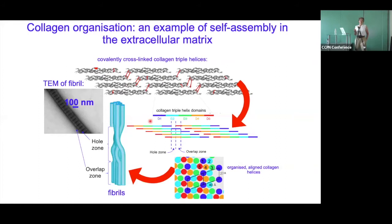Collagen is going to be the running theme through my talk today, because it exemplifies most of the solid-state NMR techniques I'm going to tell you about. Collagen is a triple helical molecule, and it arranges itself in very periodic ordered arrays, where there's a gap between the head of one molecule and the end of the next. In the resulting fibril structure you have alternating so-called overlap and hole zones. If you look at negatively stained TEM of a collagen fibre, you typically see this sort of striation pattern.